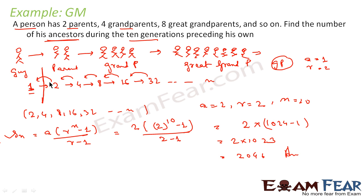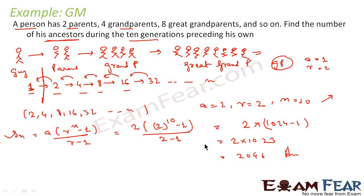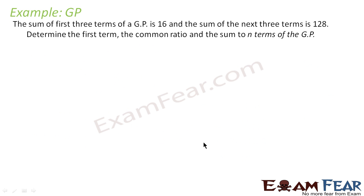The person has 2 parents, 4 grandparents, 8 great-grandparents, 16 great-great-grandparents, 32 great-great-great-grandparents and so on — confirming this is a GP. We looked only for ancestors, so we started our GP with a = 2, ignoring the person himself. With a = 2, r = 2, n = 10, we applied the formula Sₙ = a(rⁿ − 1)/(r − 1) and got the answer.